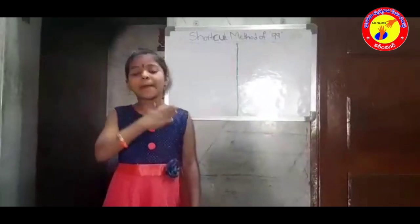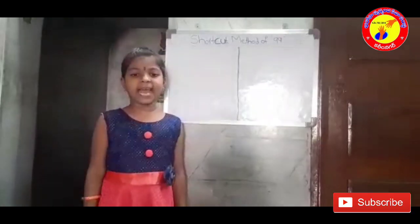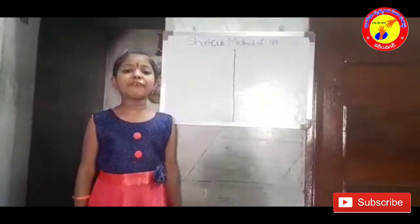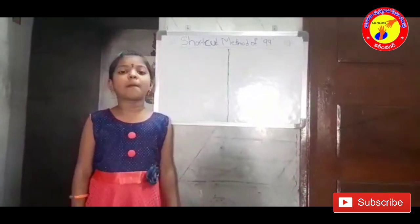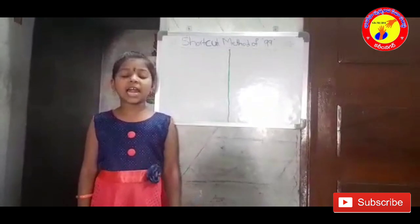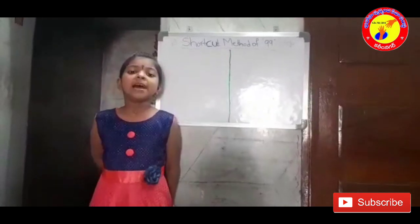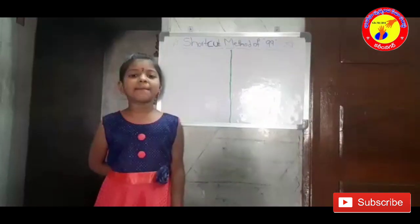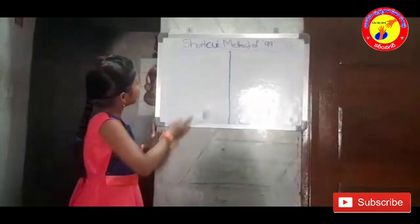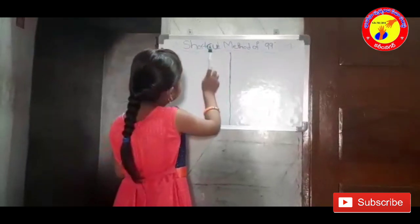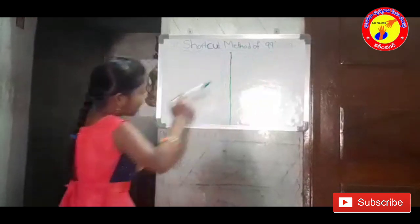Hi friends, my name is Manuri Ritanya. My father's name is Sandeep Kumar. I am studying in second standard. My school name is Indian Public School. Today I am explaining about the shortcut method of 99.